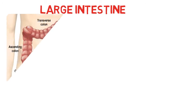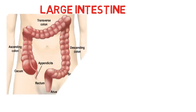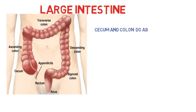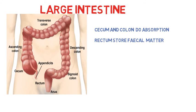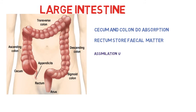So far we have discussed about digestion and the role of enzymes in digestion. Now it is time to discuss absorption. Absorption is done by the cecum and colon of the large intestine. This absorbed material is used in performing various activities inside the tissues, and this process of utilisation is called assimilation. The third part of the large intestine, called the rectum, is used for storage of fecal matter, which is undigested food product.